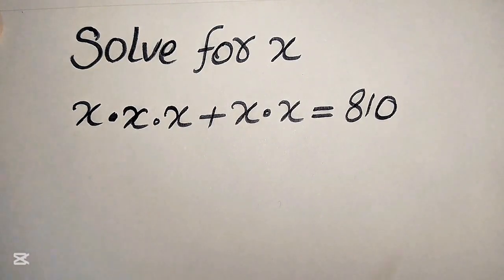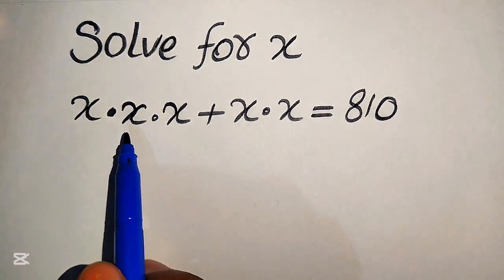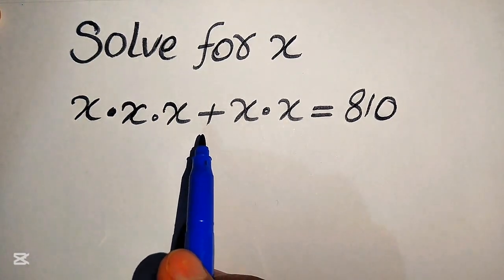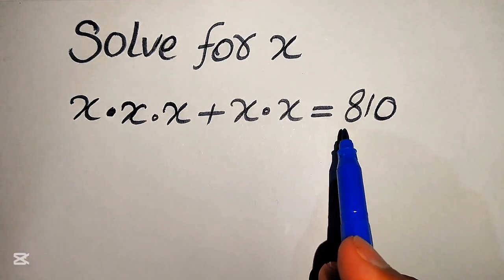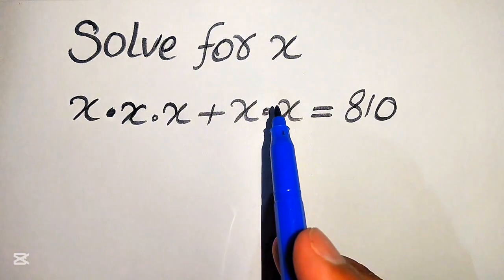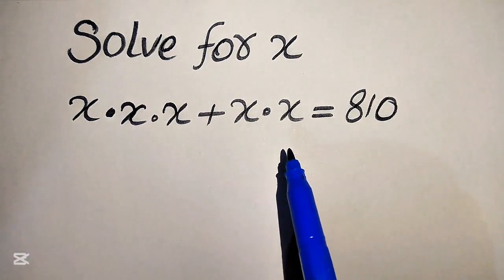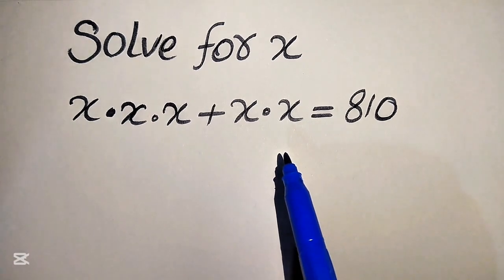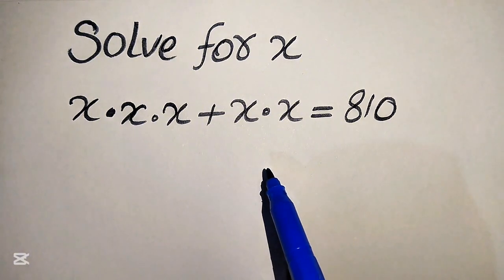Hello everyone. Today I want to show you how to solve this problem for the values of x. We have x multiplied by x multiplied by x, plus x multiplied by x, equals 810, and we solve this problem for the values of x. We find all the roots of this equation, and at the end I'll give you an assignment question related to this problem.